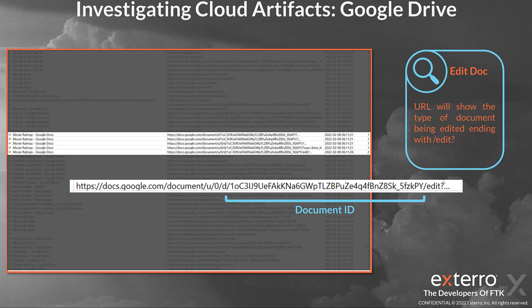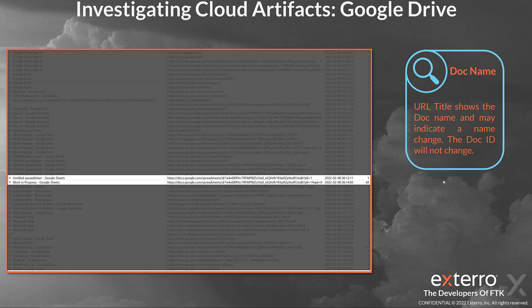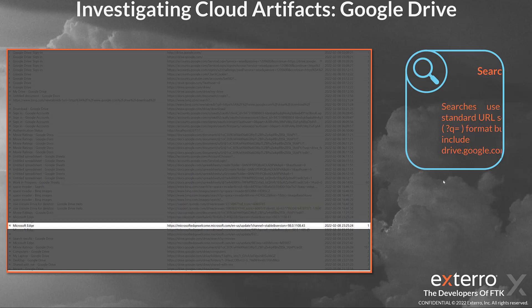The document ID within the URL is important for tracking the document through Google Drive. If you change the name of the document, the ID of the document doesn't change. For example, we had a spreadsheet that was untitled at first, and then about two minutes later the spreadsheet with the same ID was changed to the name 'work in progress.'